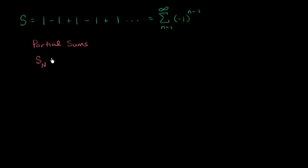So the partial sum is going to be the sum from n equals 1, but not infinity, but to capital N of negative 1 to the n minus 1.